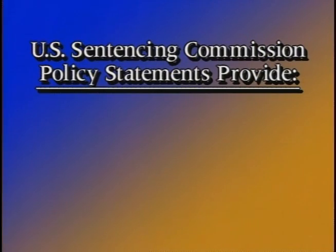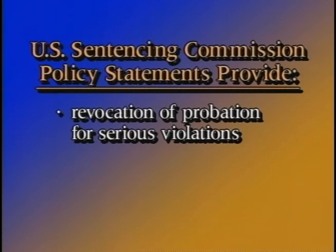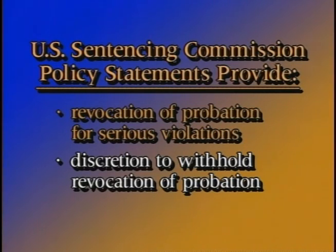Now let's turn to revocation of probation and supervised release. The Sentencing Commission has issued policy statements on this subject, located in Section 7B1.1 of the Sentencing Guidelines Manual. The Commission's policy statements provide for three grades of violations, which allow for longer prison terms for more serious violations. The court has authority to revoke probation for more serious violations of probation or supervised release, and also has discretion to withhold revocation for the lowest level of probation violations. You should note that a probation violation warrant or summons must be issued prior to the expiration of probation or supervised release, which prevents the expiration of probation and allows for a revocation hearing.